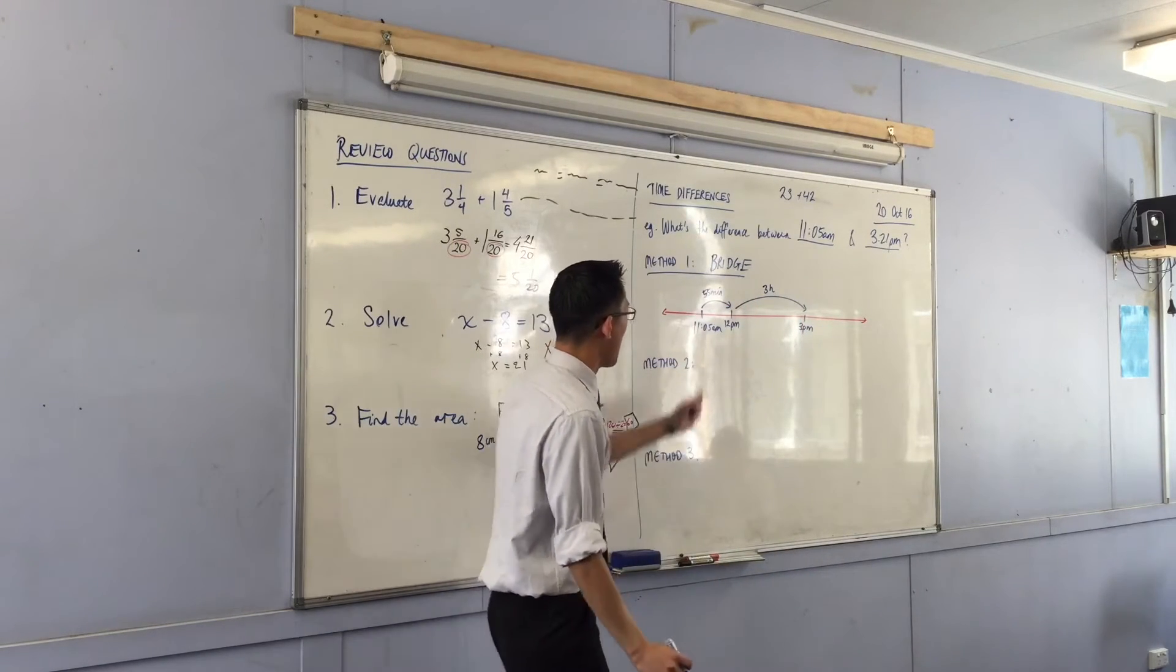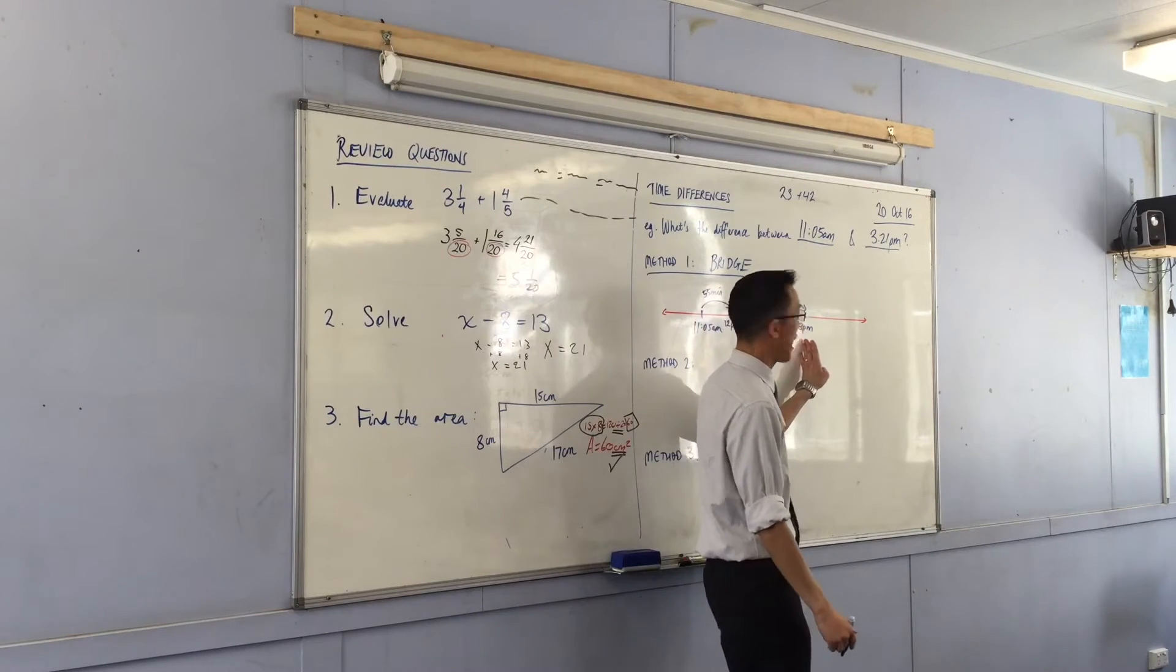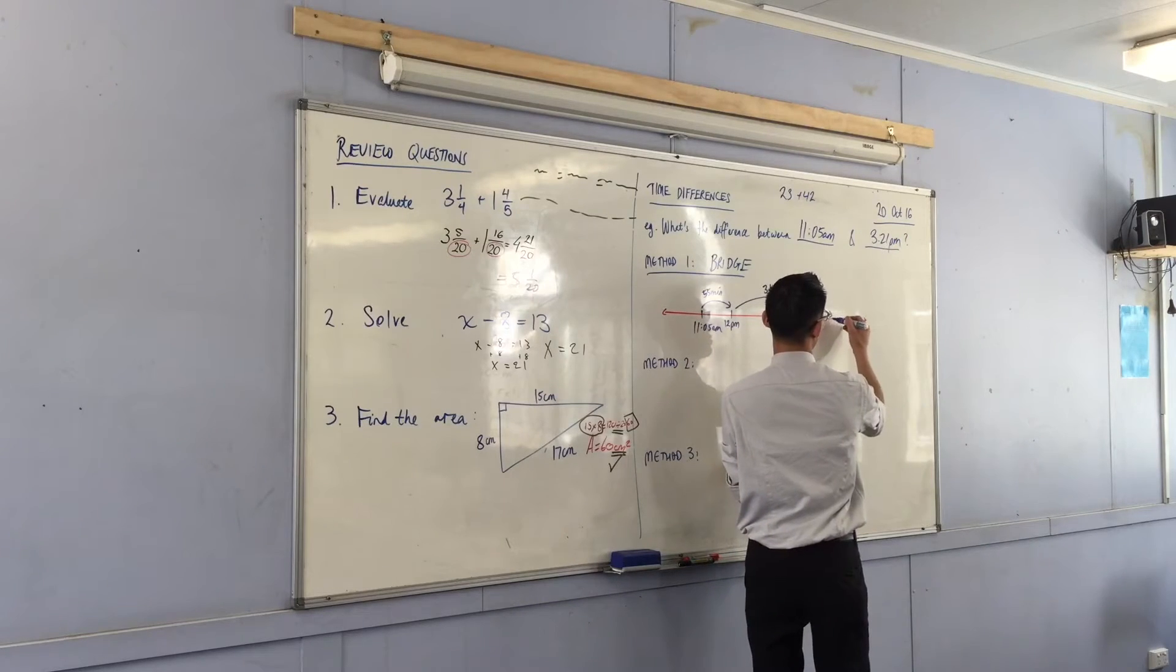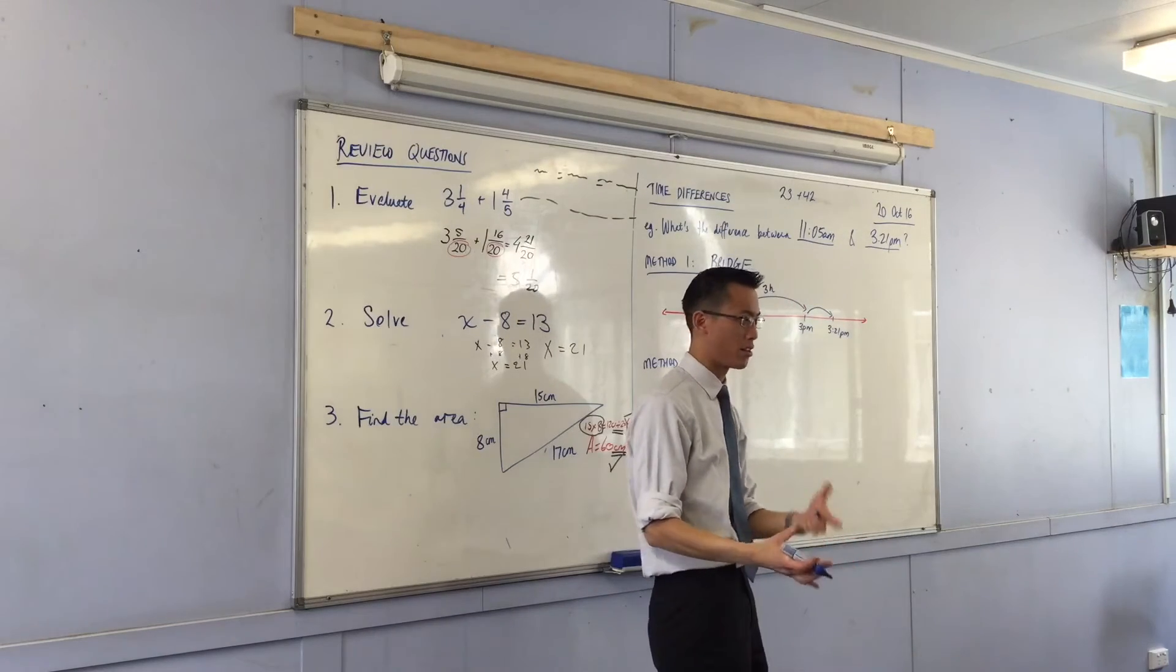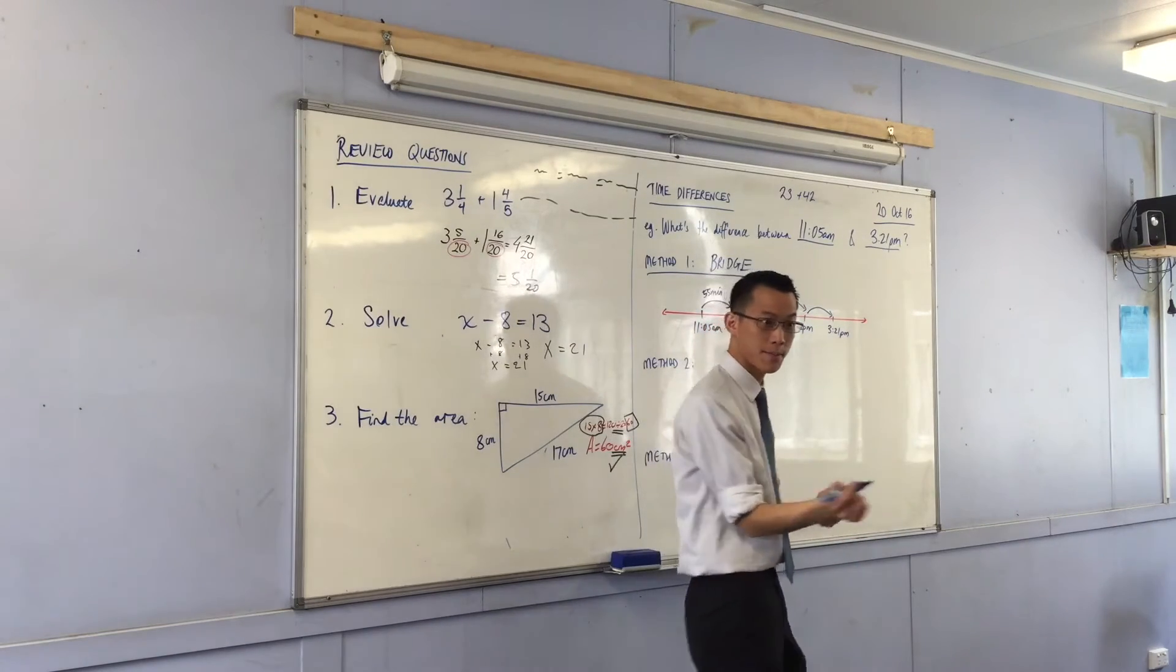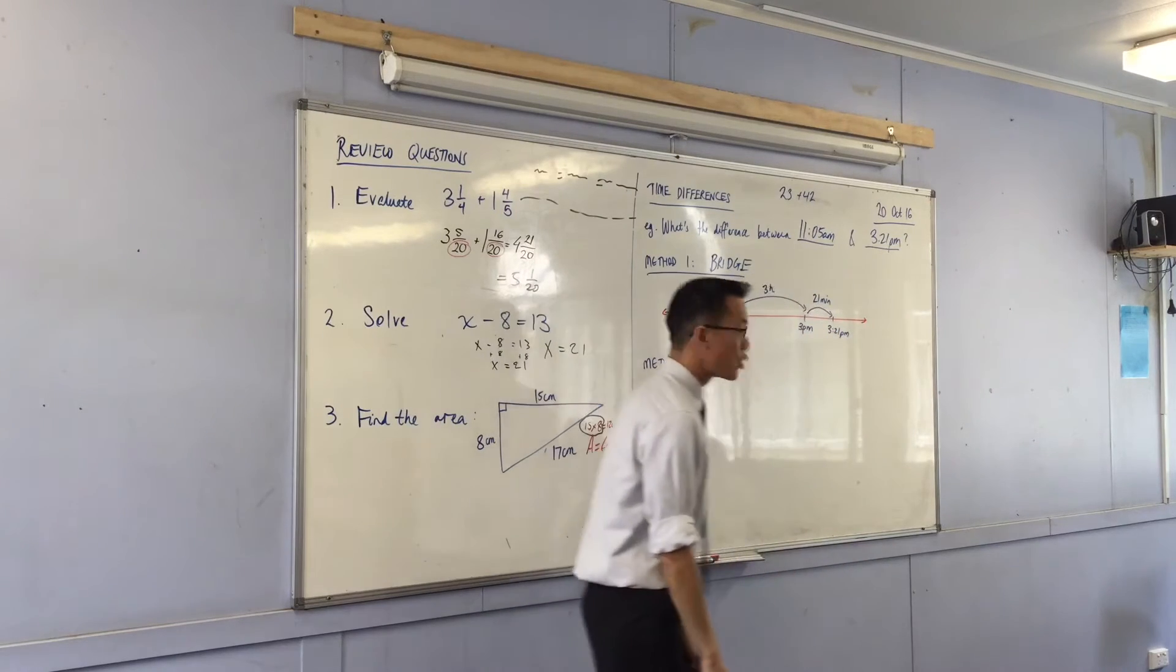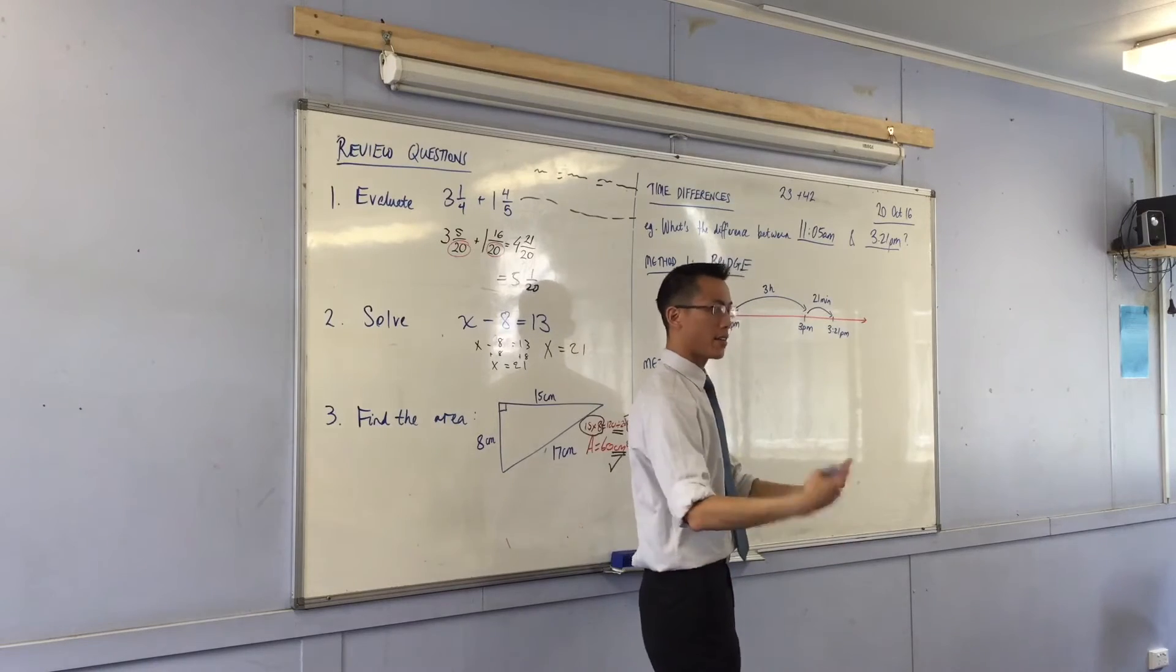Okay, I'm almost there. I've gone up to the hour. I've went across the hours. And now I'm going to get to the proper number of minutes. So I've got to get to 3:21. Which of course is easy to do because it's just from the hour. So it's 21 minutes. So you can see, what's the time difference?